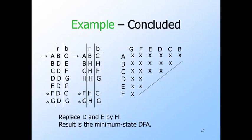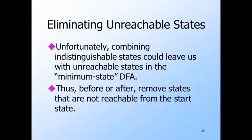As D and E both transition to D on input R, H transitions to itself on R. The transition on input B for H is to G, the same as for both D and E. Collapsing indistinguishable states goes a long way toward finding the minimum-state DFA, but there is one other issue: the possible existence of unreachable states cluttering up the transition diagram. It is easy to find and eliminate them — either from the original DFA or after merging — and it doesn't matter which order you do it.